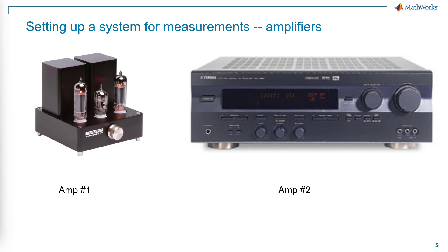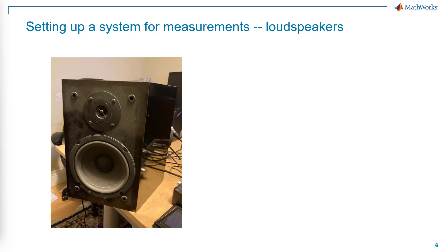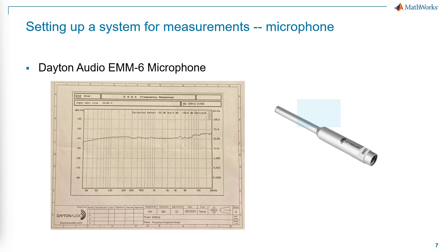These are the two amplifiers I am about to compare. The one on the left is a tube amplifier and I've had it for four years. The one on the right is a much bigger one and I've had it for 24 years. This is the loudspeaker I'm using — its response is not 20 to 20k, it's more like 80 to 20k, and we will see that in the frequency response curve. This is the microphone I'm using, and it comes with a response curve, so I could subtract the microphone effect from the measured results. But since we're doing relative measurements, this may not be needed.